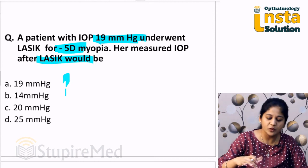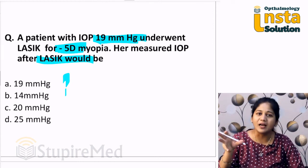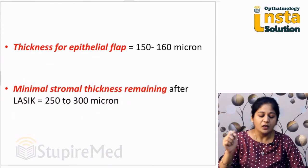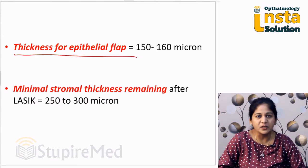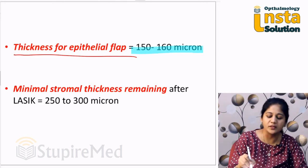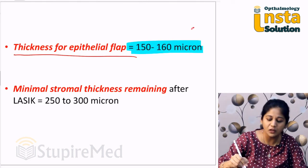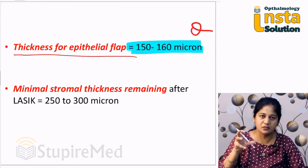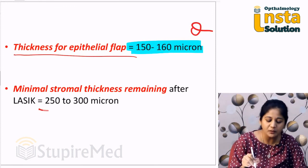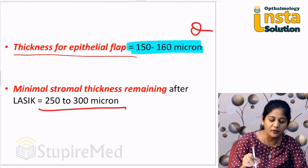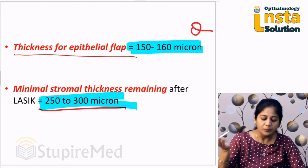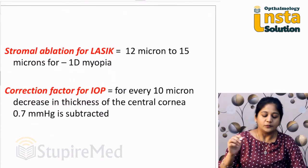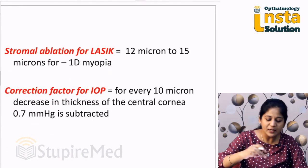First, you should know some basic calculations in LASIK and how we measure IOP. The thickness of the epithelial flap should be a minimum of 150 to 160 microns. When we do LASIK, we perform stromal ablation. After stromal ablation, the minimal thickness of the stroma left behind should be minimally 250 to 300 microns — different surgeons have different opinions, but it is mainly 250 to 300 microns.